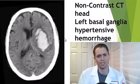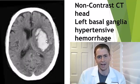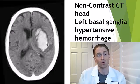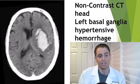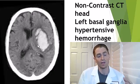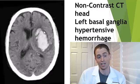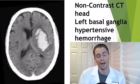CT uses x-rays, and denser tissues tend to block more x-rays and show up brighter. This is an example of someone with a hemorrhage due to high blood pressure in the left basal ganglia — a hypertensive hemorrhage — where the blood vessels burst and acute blood, being denser than brain tissue, shows up very bright. We're looking at axial images from the feet up, so this is actually the left side of the brain with the hemorrhage.